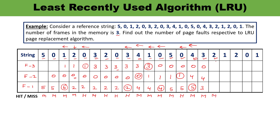Next is 2. 2 is not available — condition of miss. Before 2, 3 was used and before that 4, so 0 will be replaced by 2. Frames: 4, 2, 3. Next is 1. Before 1, both 2 and 3 were used, so 4 is least recently used and will be replaced by 1. Frames: 1, 2, 3 — condition of miss. Next is 2 — 2 is available, condition of hit. Then 0 — 0 is not available, condition of miss. Before 0, 2 and 1 were used, so 3 will be replaced by 0. Last digit is 1 — 1 is available, condition of hit. No replacement.